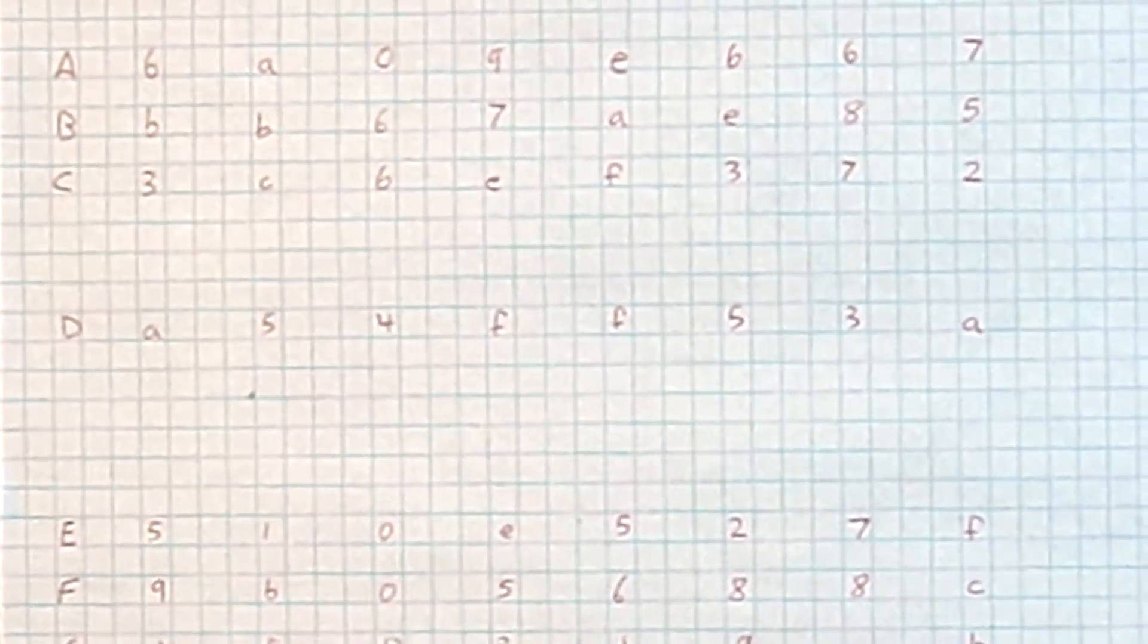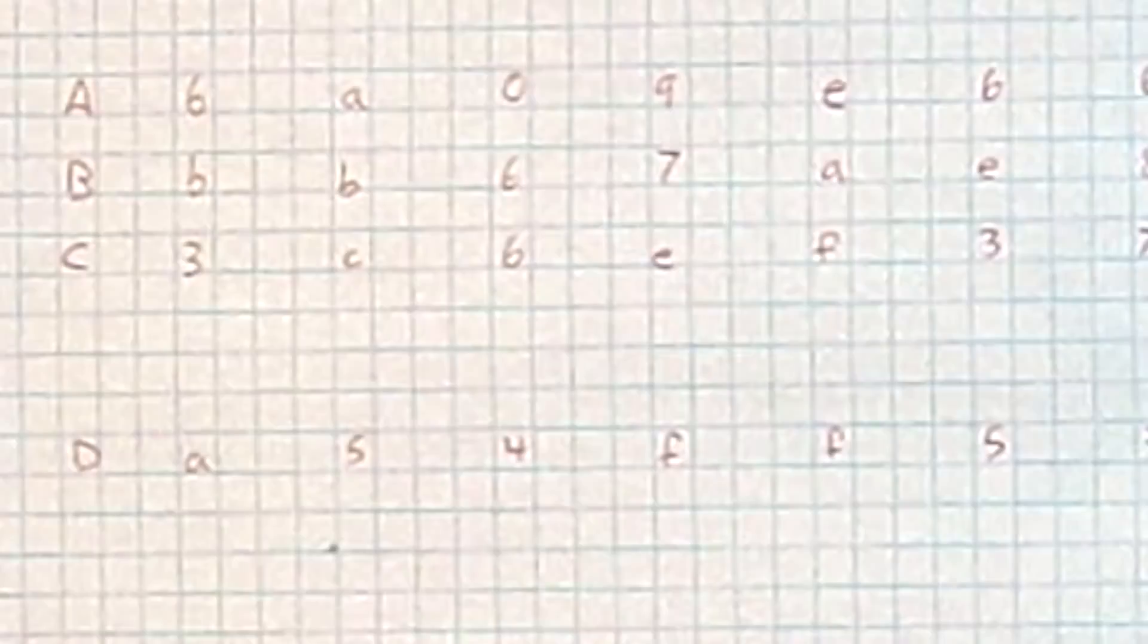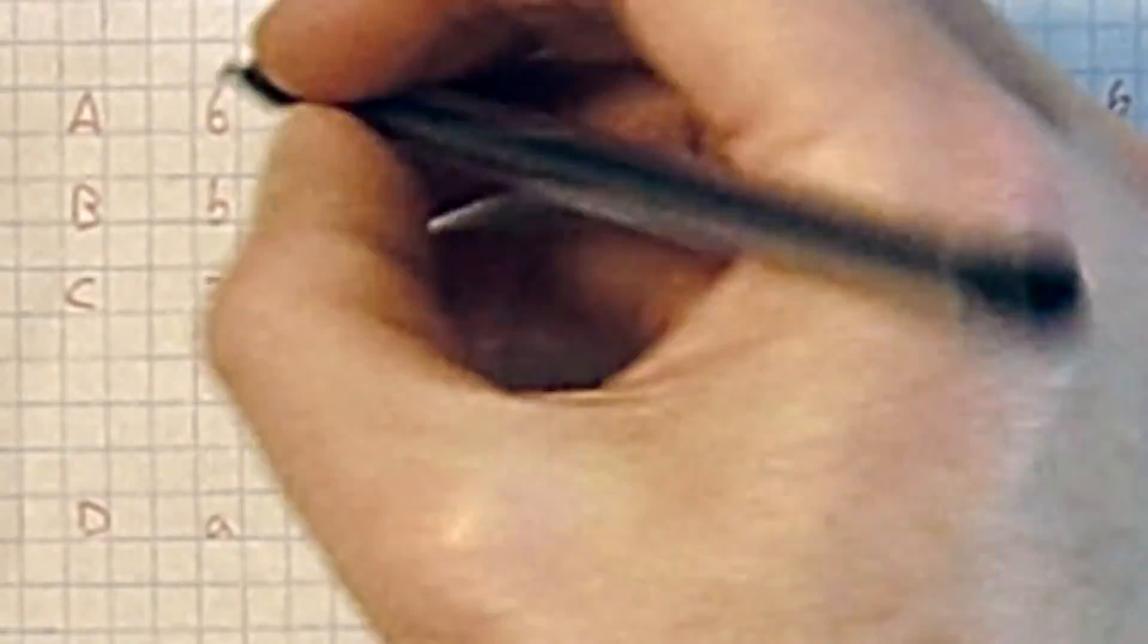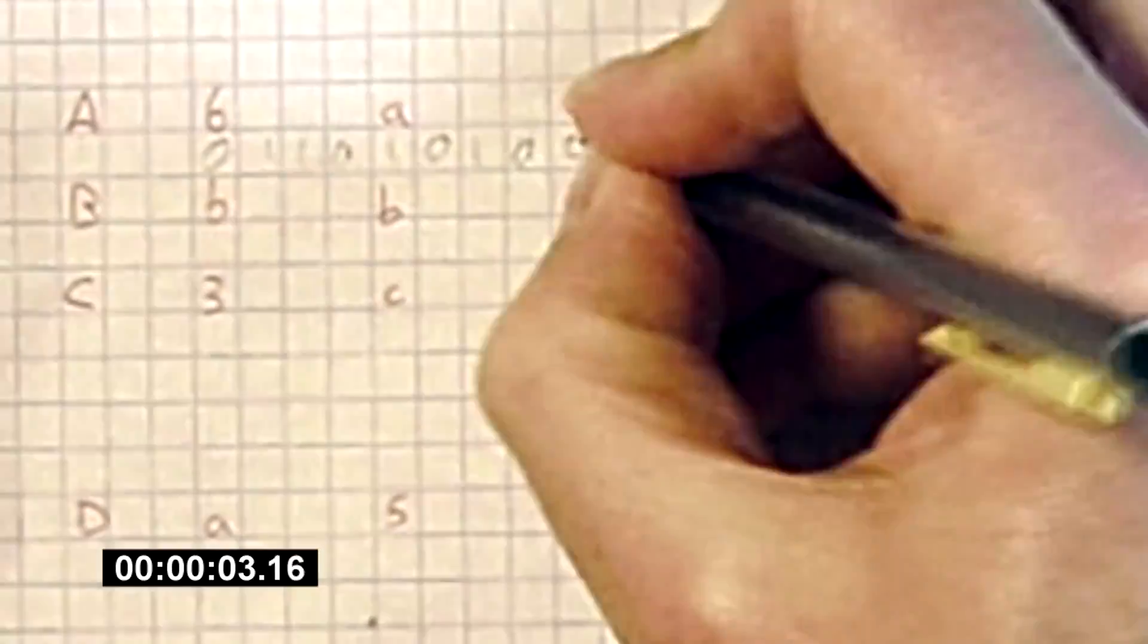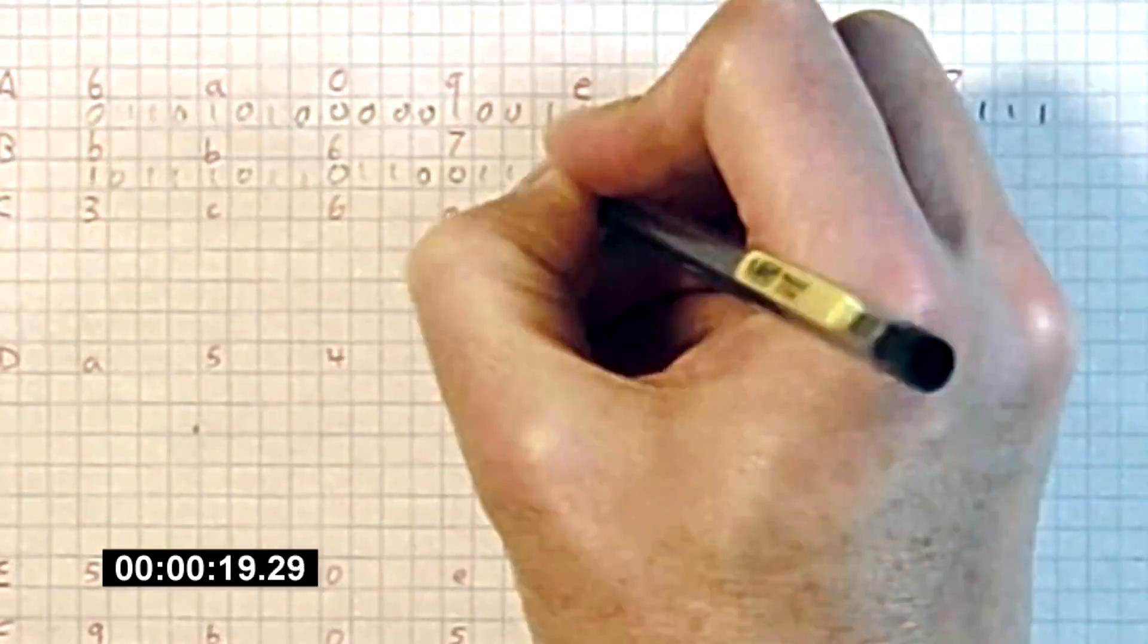So our first step is going to be convert these to binary, which is straightforward but a little tedious. So we'll start with A, B, C. 6 is 0, 1, 1, 0. 1, 0, 1, 0. 0, 0, 0, 0. 1, 0, 0, 1.